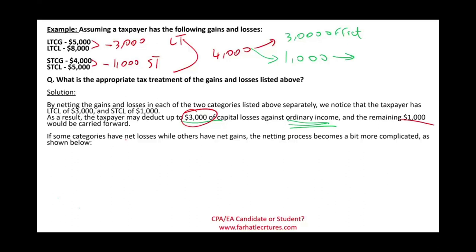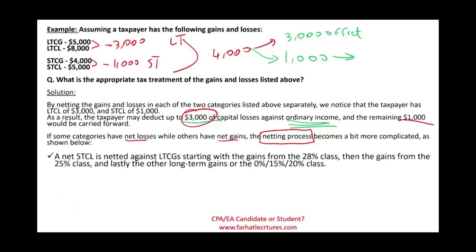What if some categories have net losses while others have net gains? Now we have to dive deeper into the netting process. If we have a net short-term capital loss, it's netted against long-term capital gains starting with the 28% rate. Why 28%? Because you want to take advantage by starting with the gains that have the highest rate. So when we have that short-term capital loss, first we knock out the 28%, then the 25%, then the 0/15/20%.